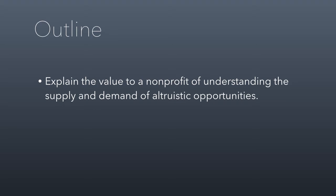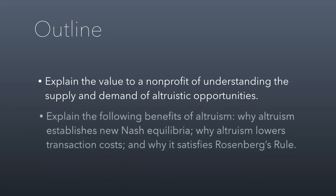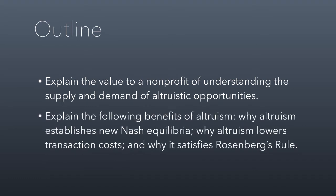The reading casts this light: donors are basically purchasers of something called an altruistic opportunity. When we think about the relationship between donors and non-profits this way, it gives us some interesting insights. The second objective is to explain why altruism establishes new Nash Equilibria, why altruism lowers transaction costs, and why it satisfies Rosenberg's Rule.